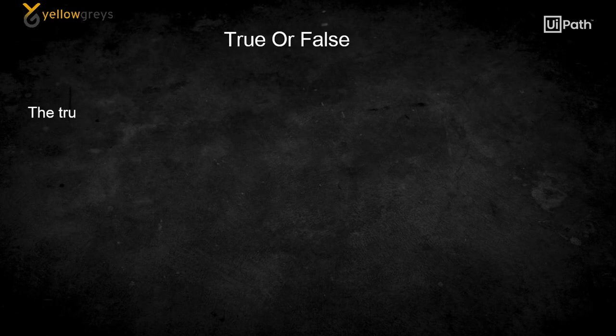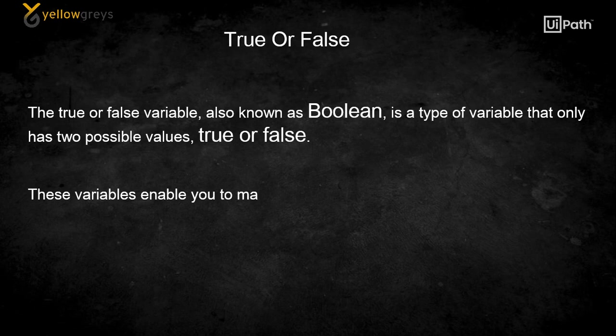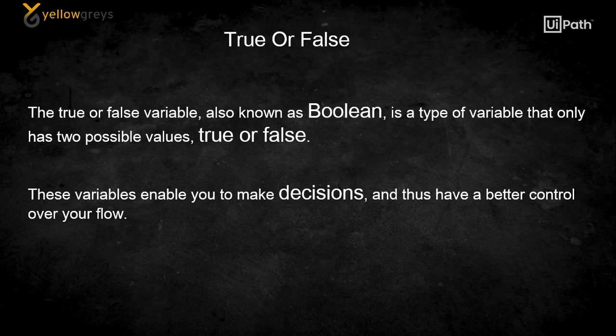True or false. The true or false variable, also known as boolean, is a type of variable that only has two possible values: true or false. These variables enable you to make decisions and thus have better control over your flow.